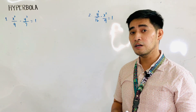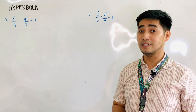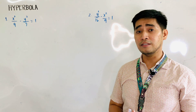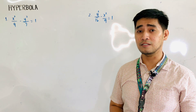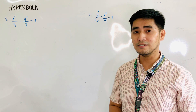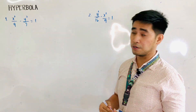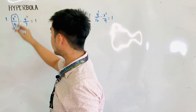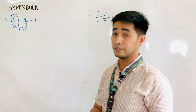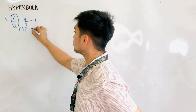For problem number one, we are given x squared over 9 minus y squared over 7 is equal to 1. To determine the transverse axis, all we need to find is the term that is positive. In this case, that is x squared over 9. Therefore, this is transverse axis x, and our transverse axis is horizontal.